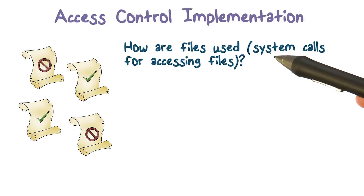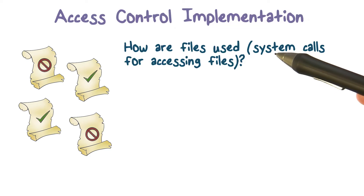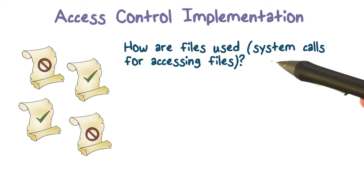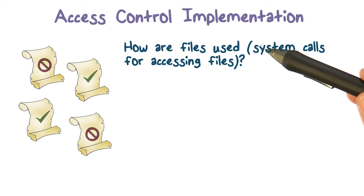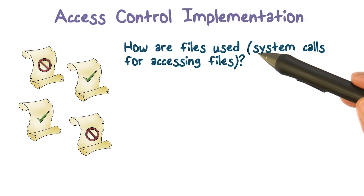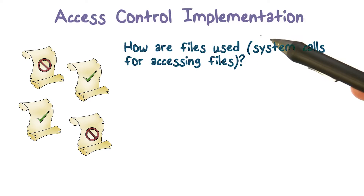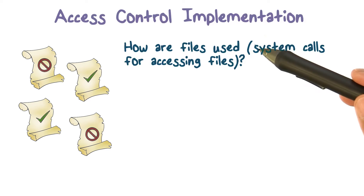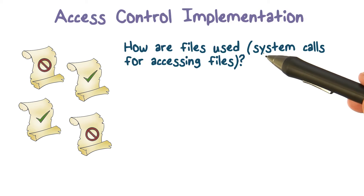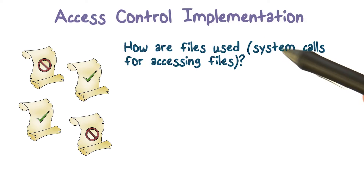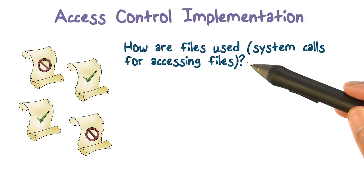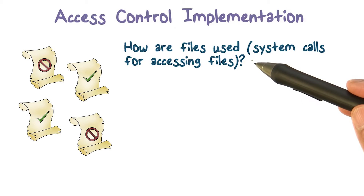We've been talking about implementation of access control for resources and requests for these resources. In Unix-based systems, resources look like files. Let's actually see how the resources are used, what kind of calls we make for accessing them, and what happens during those calls.